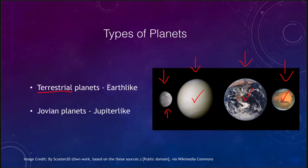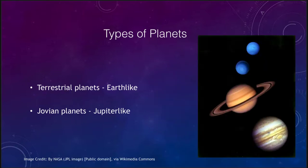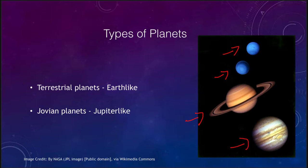The other type of planet is what we call a Jovian planet, or Jupiter-like planet. That includes Jupiter itself as the prototype of these, Saturn, Uranus, and Neptune. The Jovian planets are all very gaseous, and they are ones that we have never landed on and will never land on, because there is no solid surface on which to land.